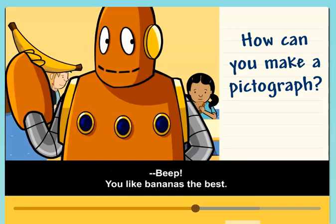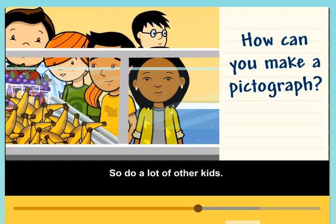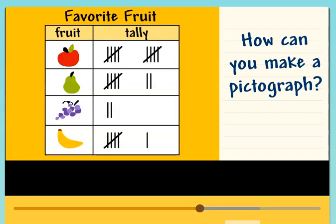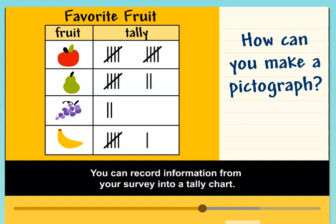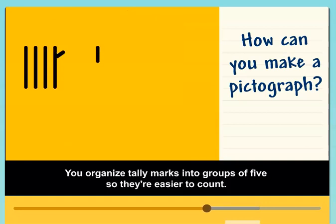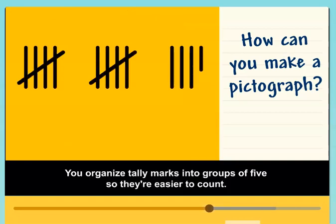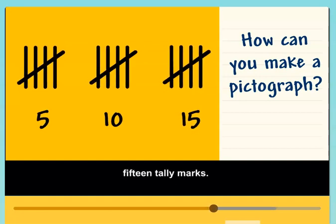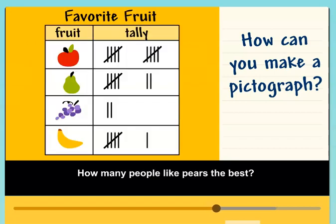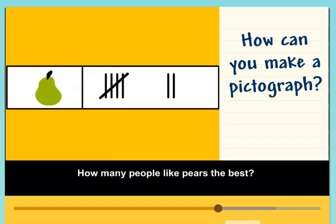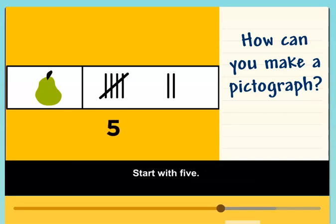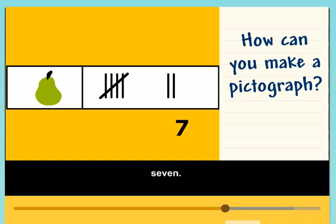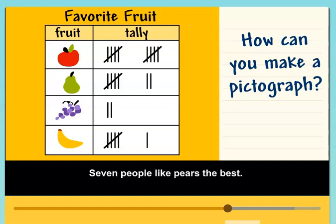You like bananas the best, and so do a lot of other kids. You can record information from your survey into a tally chart. You organize tally marks into groups of five so they're easier to count. There are five, ten, fifteen tally marks. How many people like pears the best? Start with five, then count on two: six, seven. Seven people like pears the best.